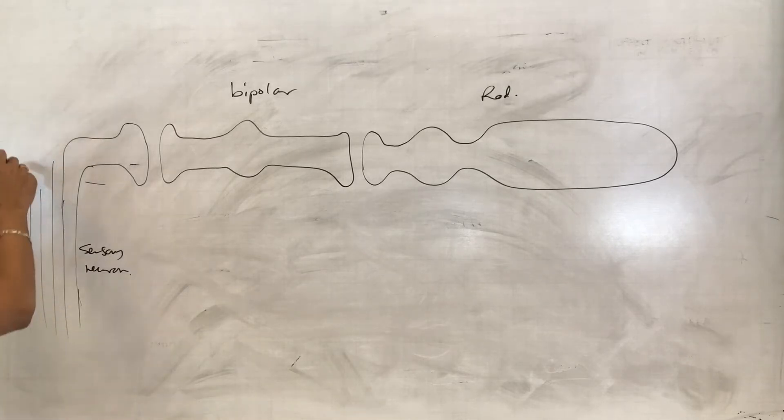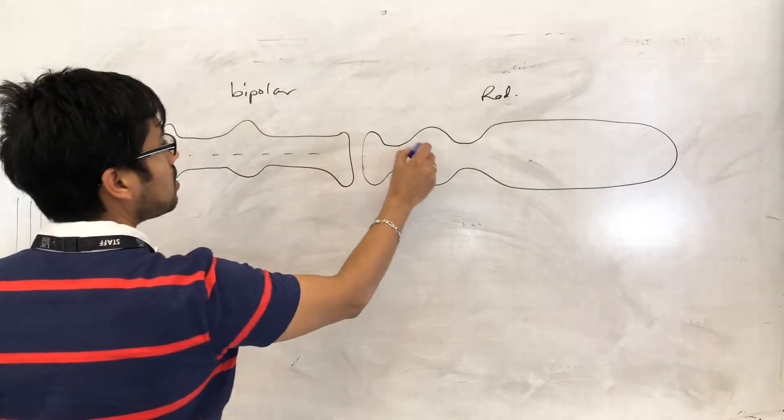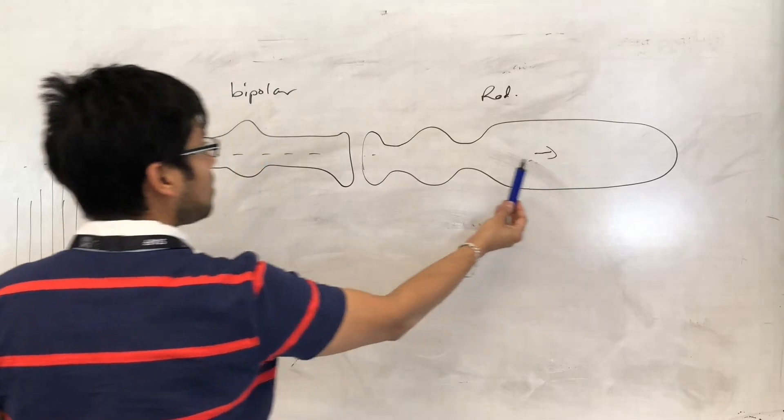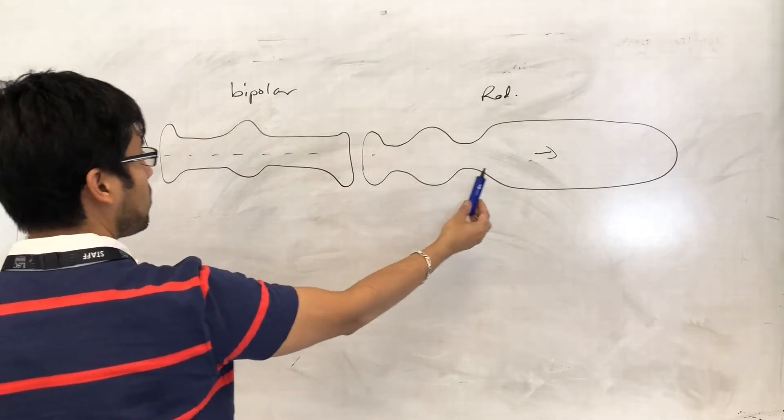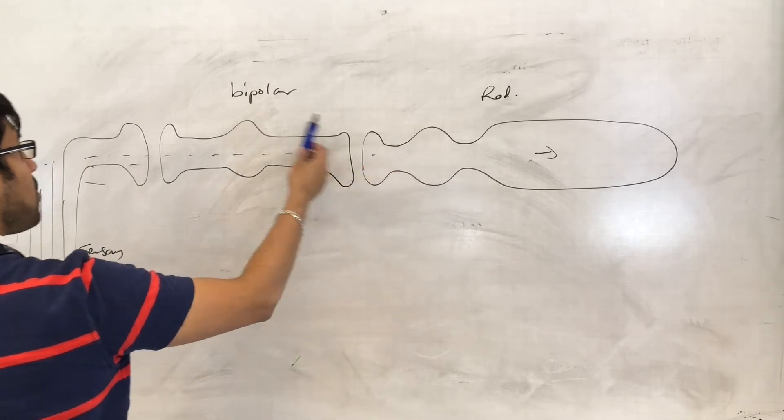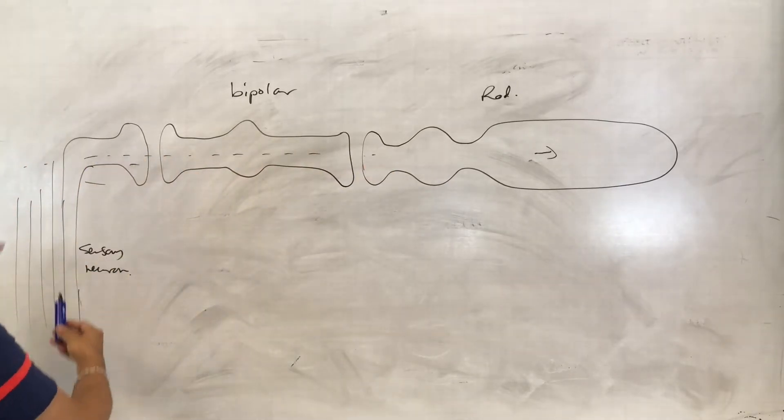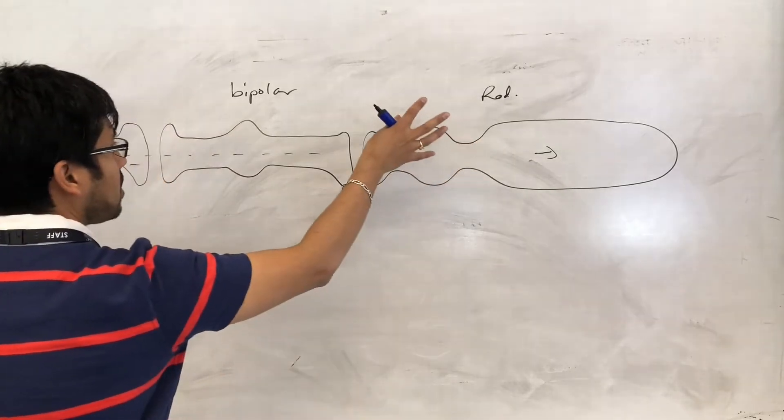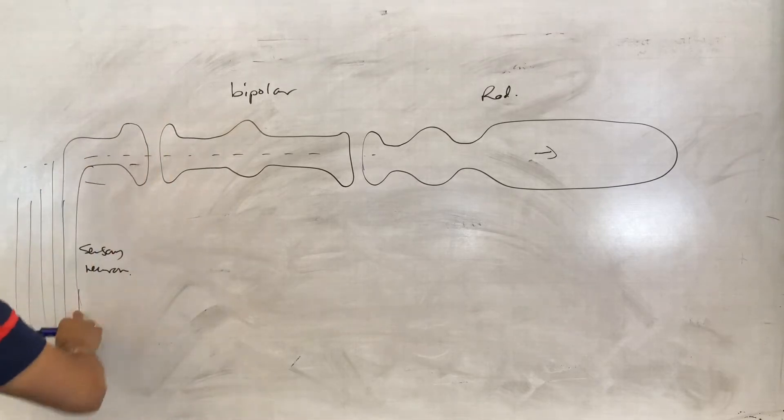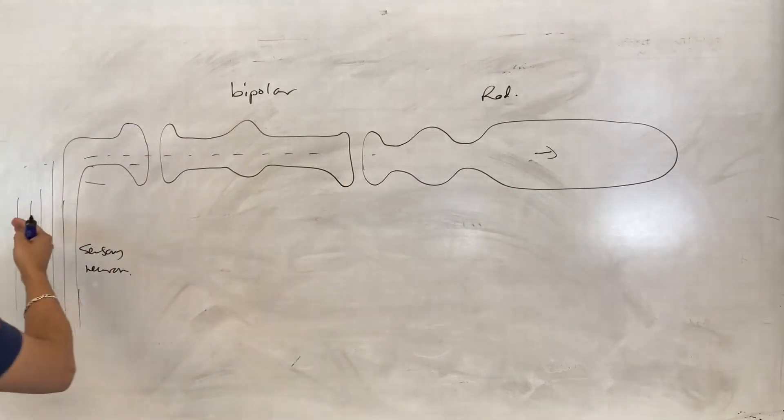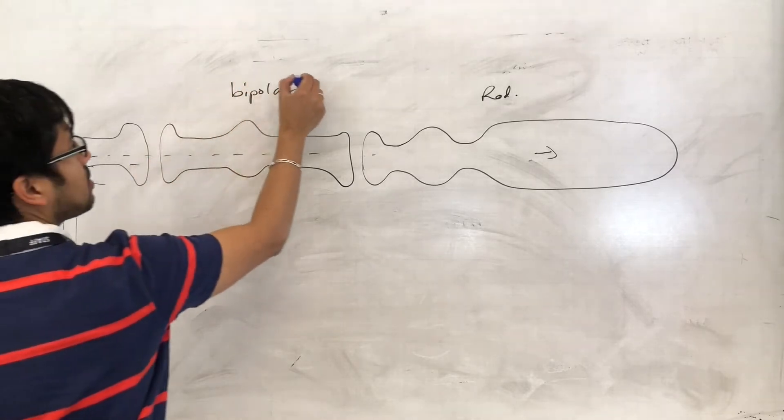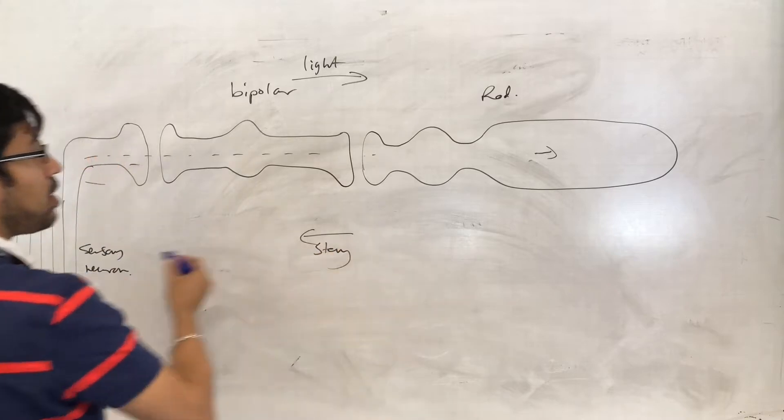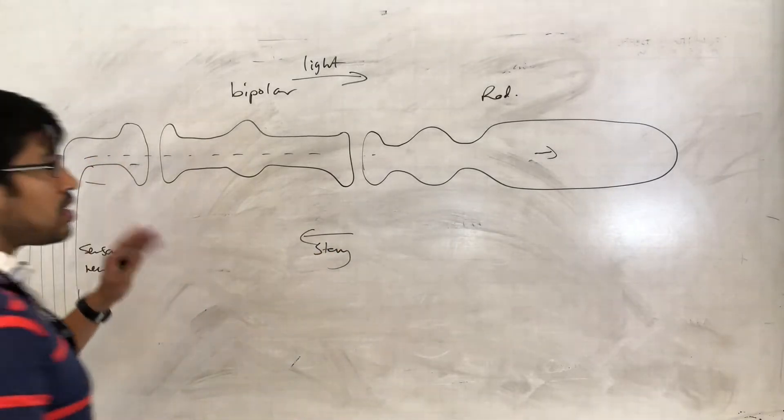And though light is going to be moving in this direction, our sequence of events, our story that results in the generation of a series of depolarizations that eventually results in an action potential in the sensory neuron essentially is going to happen this way. So light going this way, story going that way. So, let's begin.